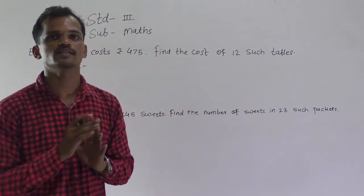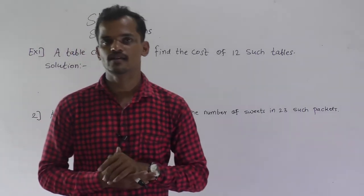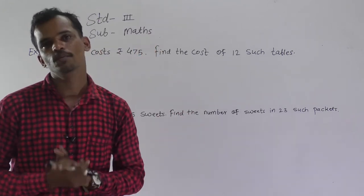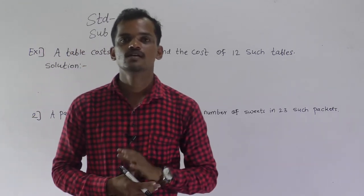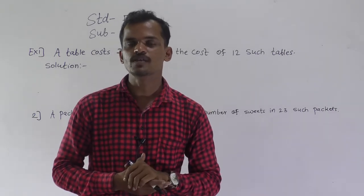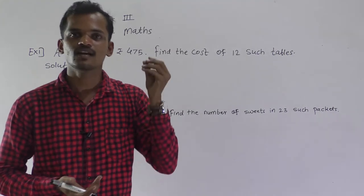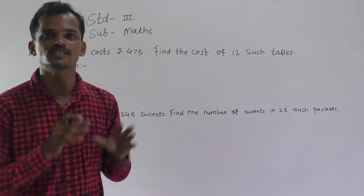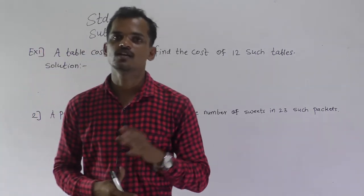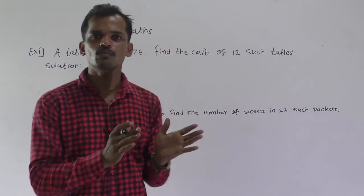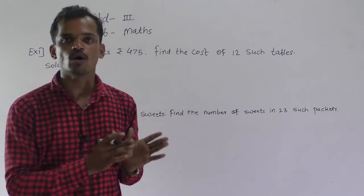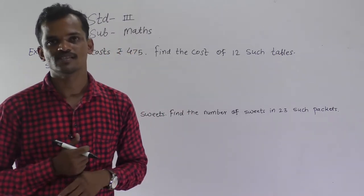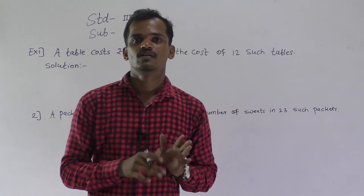If one thing is given and they ask about many things, remember this: one to many means you have to do multiplication. For example, suppose the cost of one pen is five rupees — what will be the cost of ten pens? Here, cost of one pen is given and they ask about ten pens, so you do multiplication. Another example: in one box there are ten apples — how many apples are in five boxes? Such examples are related to multiplication.